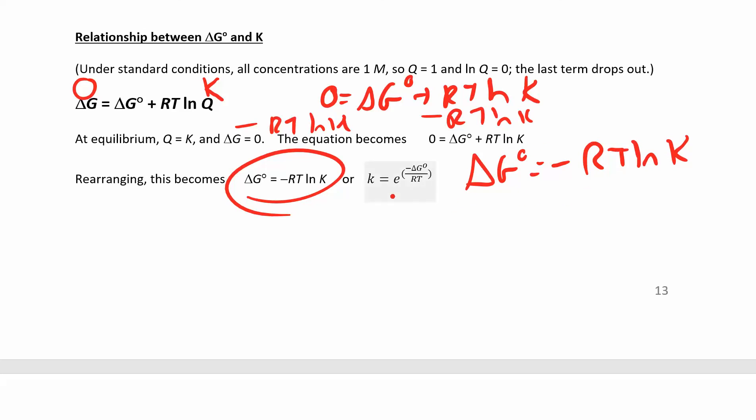If you just want to solve for the equilibrium constant, then you can rearrange the equation to solve for K. Divide by negative RT. So you get the natural log of K is negative delta G naught over R times T. To undo that natural log, take the E of both sides, and get K is E to the negative delta G naught over R times T.